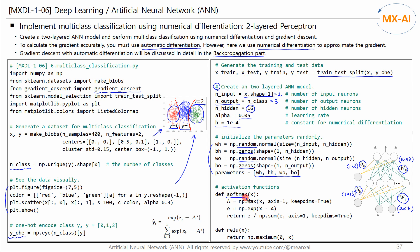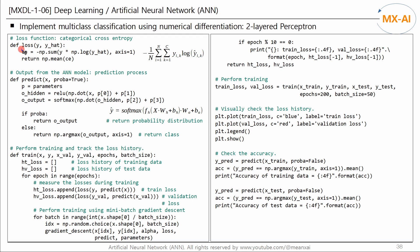Next, we write a function to calculate softmax activation function values using the stable formula. Since this is a multi-class classification model, the output layer uses softmax. We also write a function to calculate the ReLU activation function used in the hidden layer, and a function to calculate the cross-entropy loss. Then we write a function to calculate the output from the neural network.